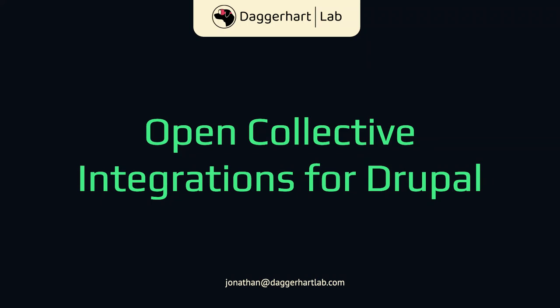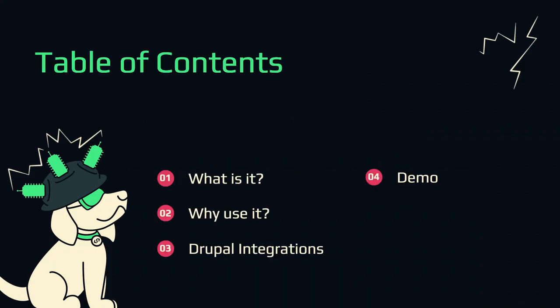I forgot to put an about-me slide, so we'll just pretend. Hi, I'm Jonathan Daggerhart. You can find me on Twitter at Daggerhart — D-A-G-G-E-R-H-A-R-T. I've been doing Drupal and WordPress for 16-plus years and own a company called Daggerhart Lab. I'm also an organizer of Drupal Camp Asheville and I maintain the website.